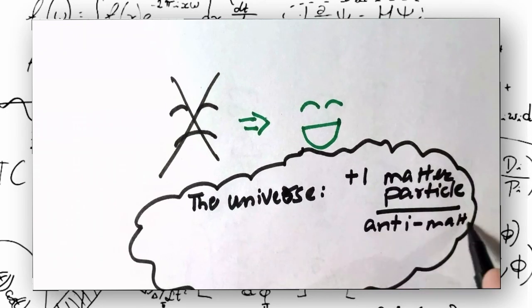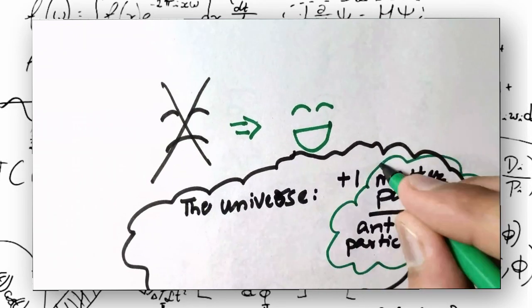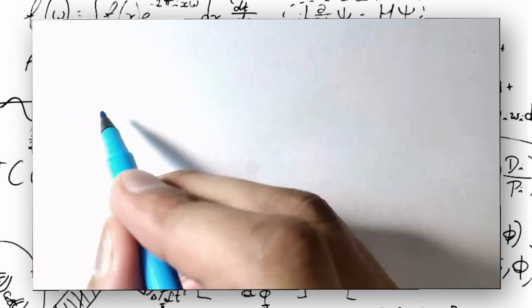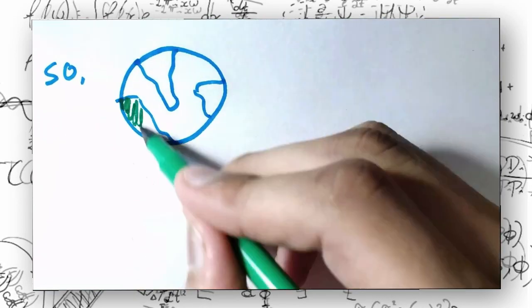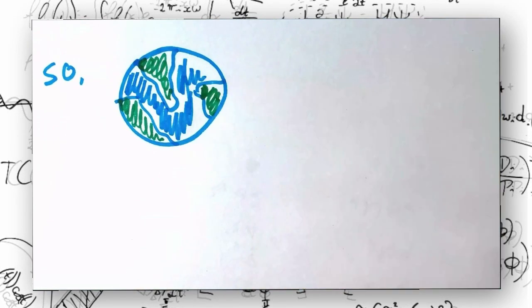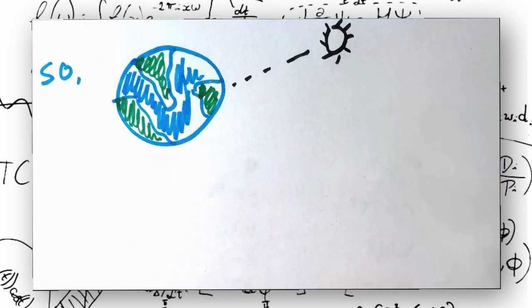Around one matter particle for every 10 billion antimatter particles, which by pure accident resulted in slightly more matter than antimatter in our present state of the universe. So here we are as a result of the gratitude of our own cosmos.